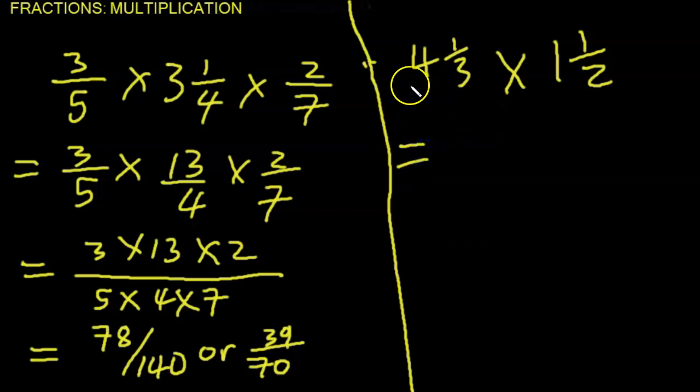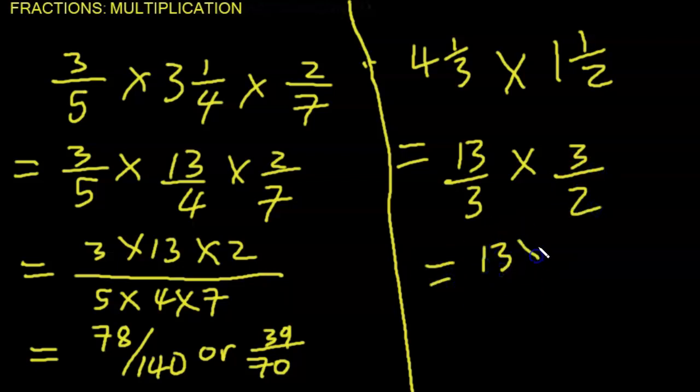So again we convert the mixed fractions. So 3 times 4, 12, 12 and 1, so we have 13 over 3 times 1 and a half, 2 times 1 that's 2 plus 1 is 3, so 1 and a half is rewritten as 3 over 2. So we have 13 times 3 over 3 times 2.